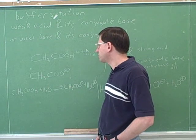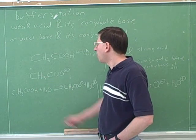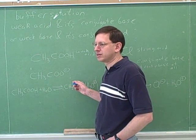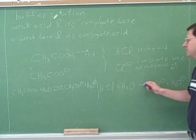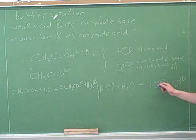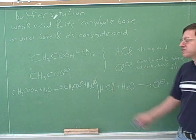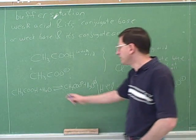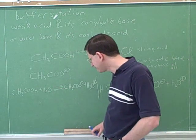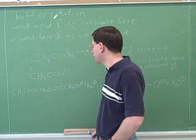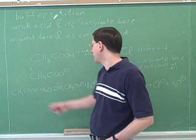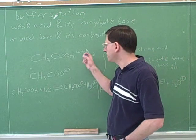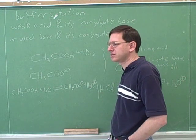When the reaction finishes, it's not going to be all acetic acid or all acetate — there will be a mixture of both. Compare that to the strong acid case: when that reaction finishes, all we have in solution is chloride, with no hydrochloric acid left, because hydrochloric acid completely deprotonates. But here, both the acetic acid and acetate remain in equilibrium because this is a weak acid that does not completely deprotonate.